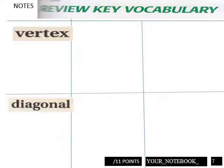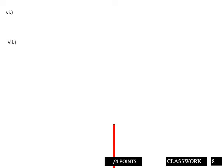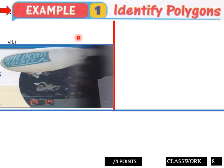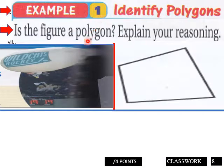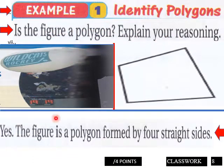Example one: Identify polygons. Is the figure a polygon? Explain your reasoning. Yes, the figure is a polygon formed by four straight sides, so each side is straight.